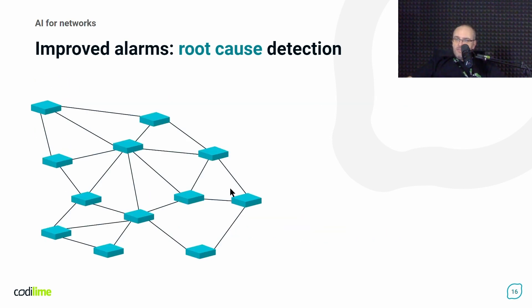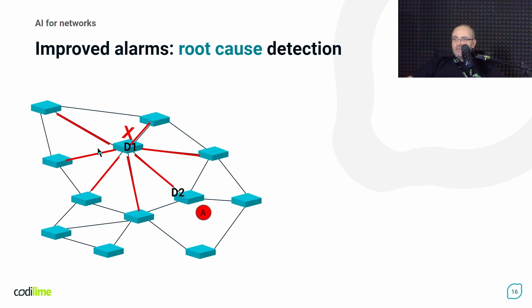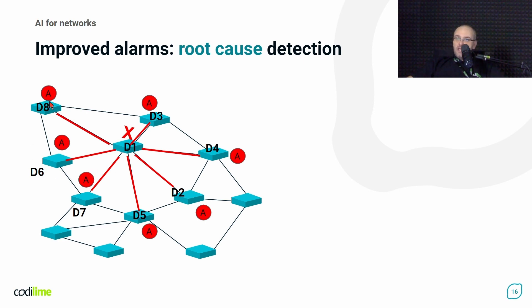Let's look at a simple example where we have a network with device one, which has failed. Usually this means that all the links connected to this device are also failed, so we will start receiving alerts on neighboring nodes and neighboring devices that something is wrong with particular links. So we have an explosion of alerts. Just after detecting that a particular link has failed, the nodes will start using alternative paths to forward the traffic, which may cause another type of alarm related to overloading.